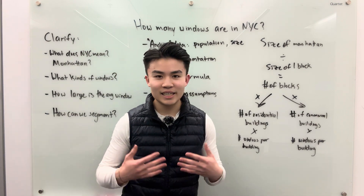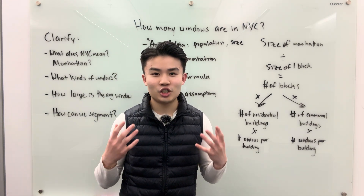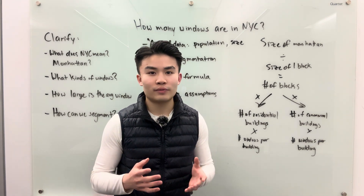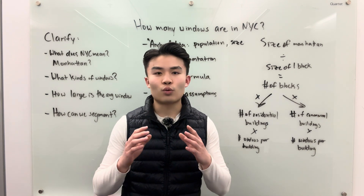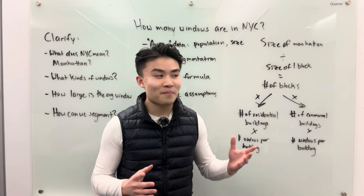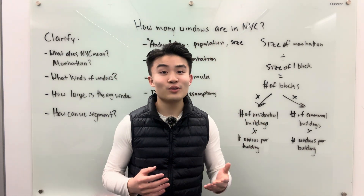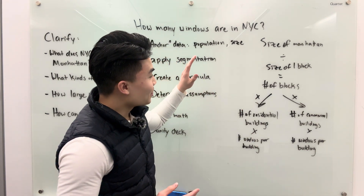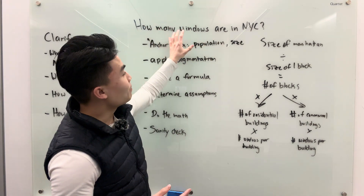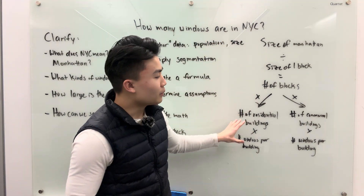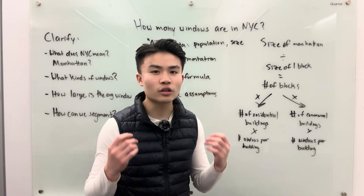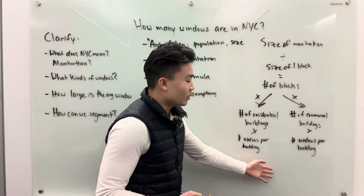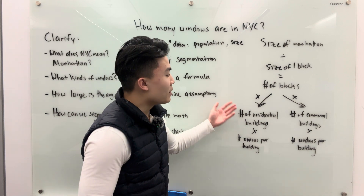The goal in these kinds of interviews is to basically show the interviewer that you can think through a structured approach to coming up with some sort of number. The objective is not actually to get to the right number, because no one actually knows how many windows are in New York City. If you do, let me know in the comments — I'd love to have you fact-check that number. The goal is just to see that you can take something that's really ambiguous and come up with a structured problem-solving approach. As long as your assumptions are somewhat reasonable and backed up by logic, it doesn't really matter ultimately what the end number is, as long as the approach made sense.